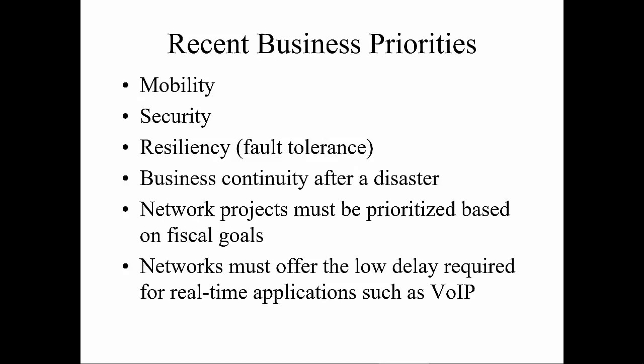Other business priorities could be mobility, security, resilience, or fault tolerance. It could be disaster recovery or business continuity after a disaster. What projects are going to be prioritized? Are there any things that will require QoS or CoS? Are there low latency requirements for applications — things like voice? Resilience means how much stress a network can handle and how quickly the network can rebound from a problem. That could include security breaches, natural disasters, or catastrophic software or hardware failures.